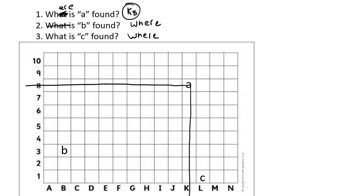Okay, that was lame. Number two, where is B found? Where is B found? B is found here. So it's in column B, row three. So that would be B3.